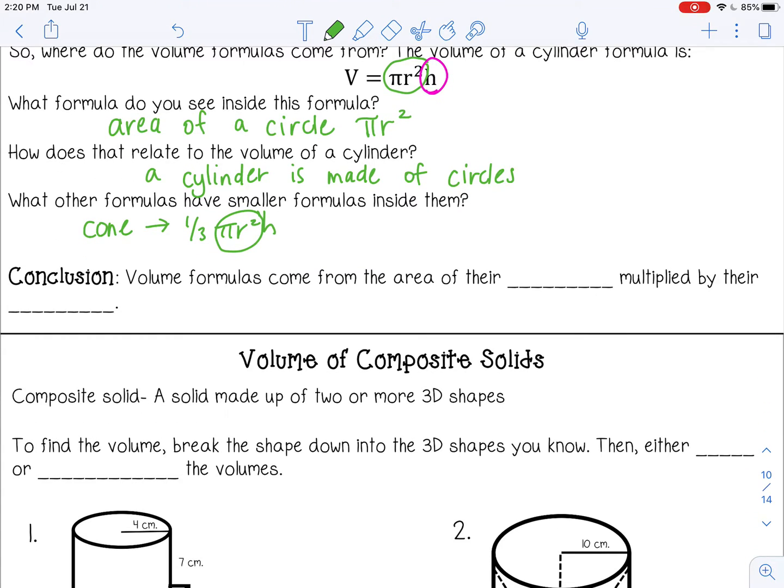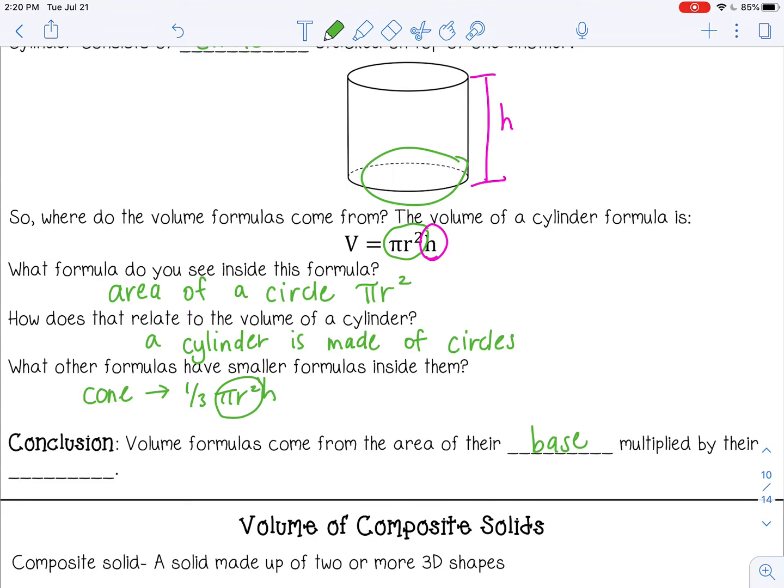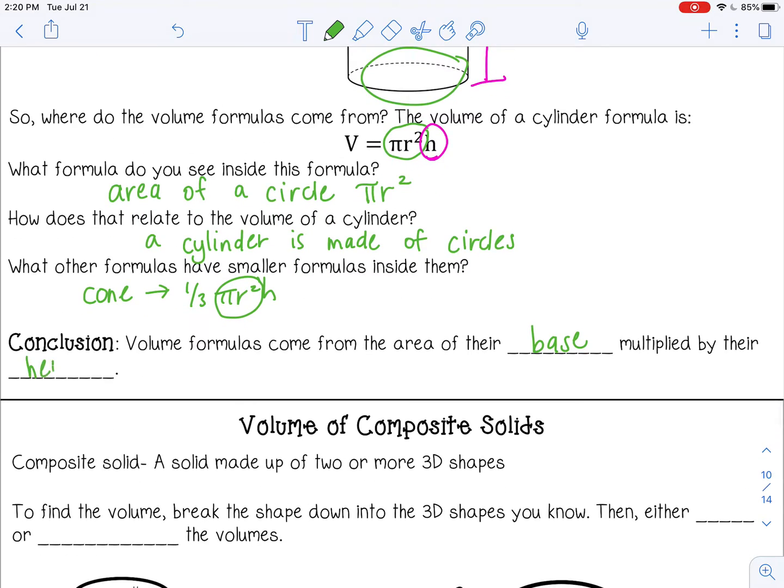So the conclusion is volume formulas come from the area of their base. So for example, a cone and a cylinder, the base is a circle multiplied by their height. So how many circles are there? And the same can be said for a rectangular prism. For a prism, it's base times height, and the base is length times width. That's a rectangle. And then the height is how many rectangles are there.